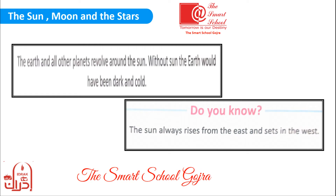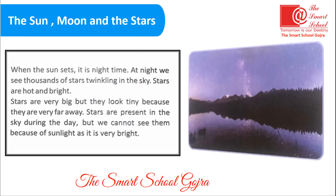Earth and all other planets revolve around the sun. Without the sun, earth would have been dark and cold. Dear children, do you know the sun rises from the east and sets in the west? (Suraj mashriq se tulu hota hai aur maghrib mein ghurub hota hai.) When the sun sets, it is night time.